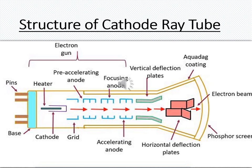The fourth part is the aqua-dag coating and the glass envelope. All these components are enclosed in an evacuated glass envelope which has an aqua-dag coating along the neck of the tube. This aqua-dag coating is connected to the focusing anode so that when electron beams divert in different directions, they are directed back toward the screen.